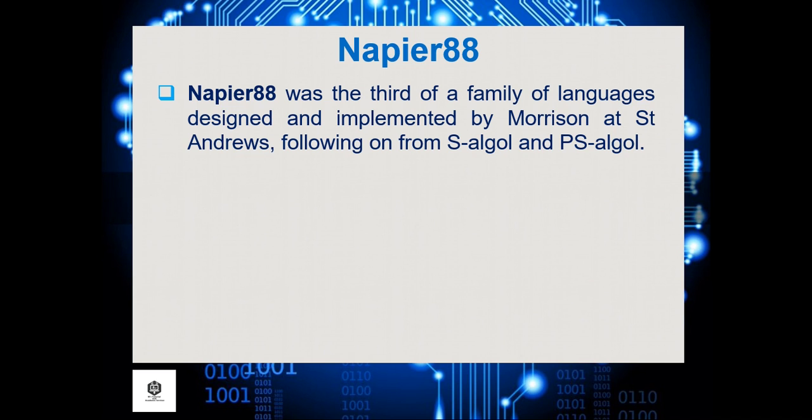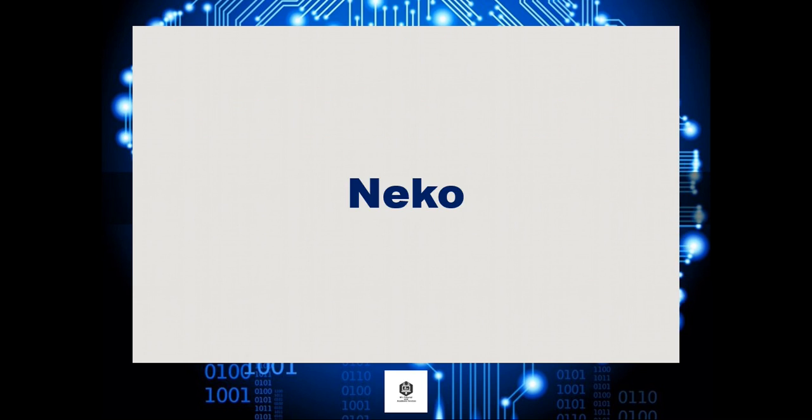Napier 88 was the third of a family of languages designed and implemented by Morrison at St. Andrews, following on from S-Algol and PS-Algol.